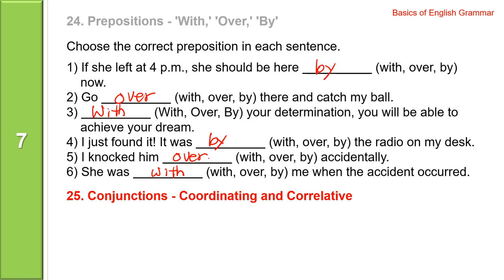Let's read the sentences one more time. If she left at 4 p.m., she should be here by now. Go over there and catch my ball. With your determination, you'll be able to achieve your dream. I just found it — it was by the radio on my desk. I knocked him over accidentally. She was with me when the accident occurred.